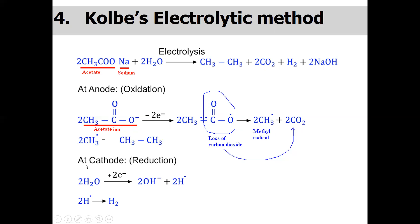At the cathode, water molecules abstract electrons and are converted into hydroxide ions plus two hydrogen radicals; these two hydrogen radicals combine to give hydrogen gas. A limitation of this reaction is that we generally obtain symmetrical alkanes — for example, acetic acid gives ethane and propanoic acid gives butane — meaning we generally get an even number of carbons in the product chain, such as ethane, butane, and hexane. This limitation can be addressed by mixing two different carboxylic acid salts to obtain different carbon-chain alkanes.